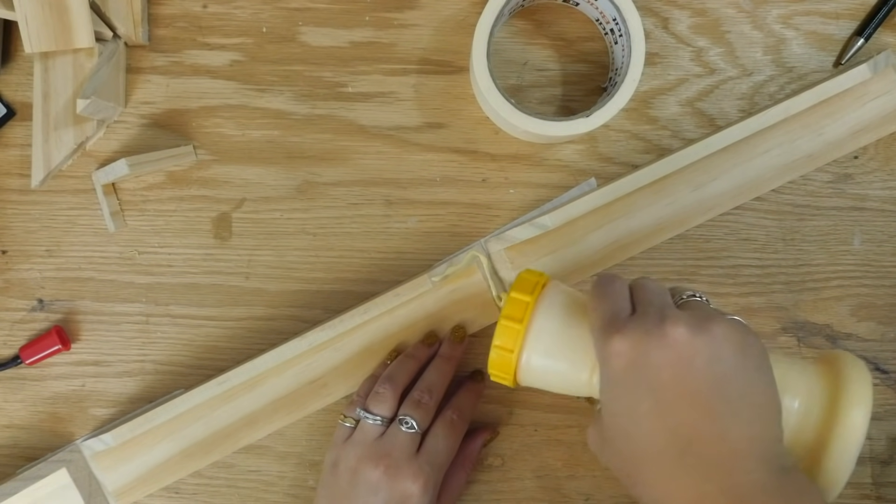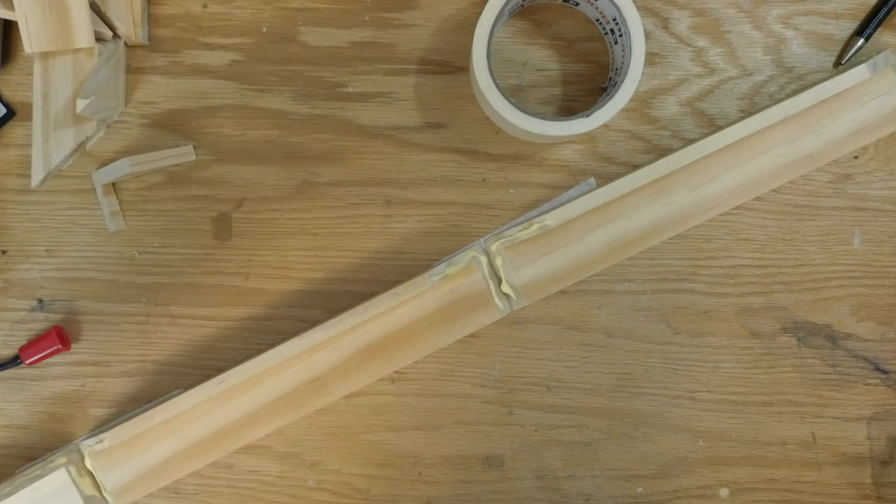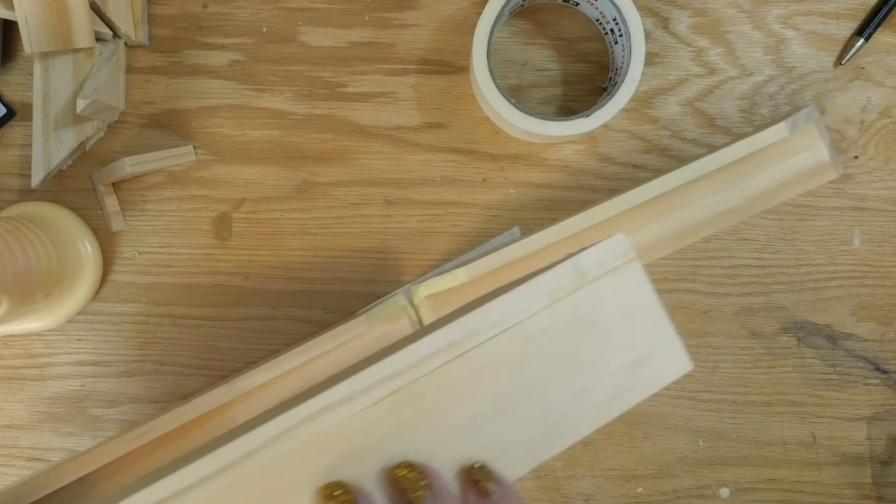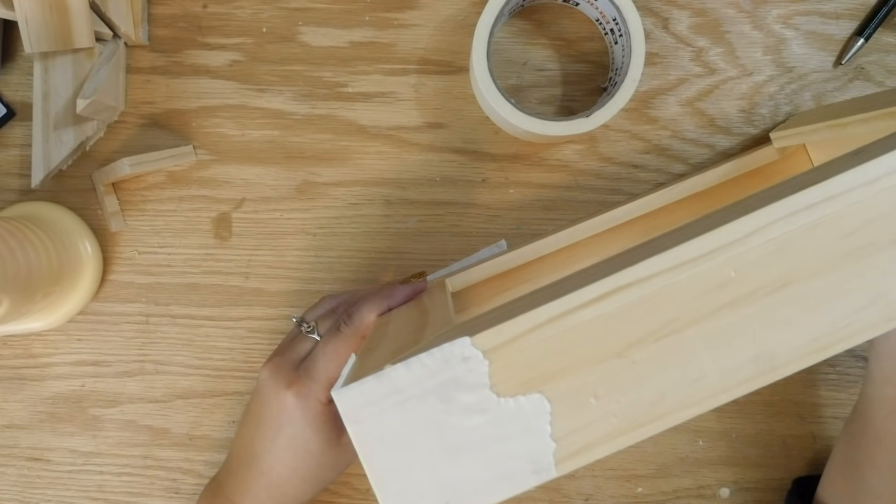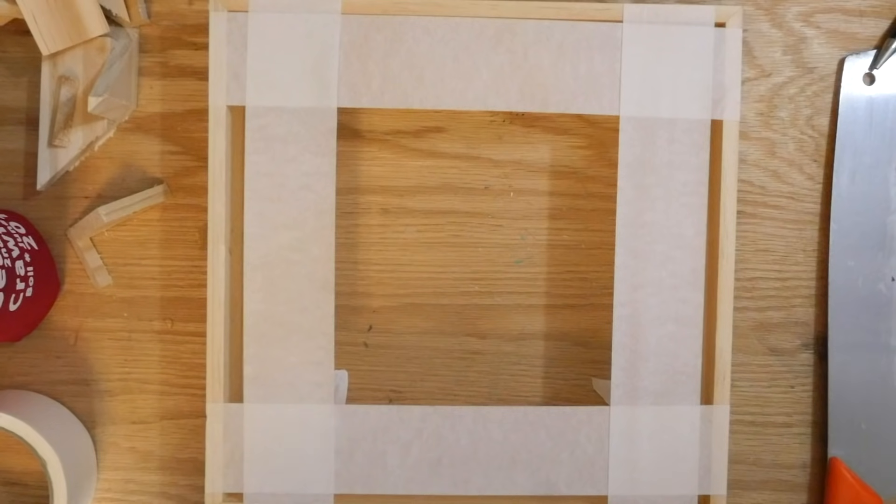Apply glue to all of the ends and assemble the frame. For me, with the taped edges, I just had to roll it up and then add one last piece of tape to the fourth corner. If you have one of those fancy corner band clamps, you can use that to hold the frame while it dries. I don't, but I find the tape works well enough. I ended up adding some more tape going across each corner just to make sure everything was nice and tight. Clean up any excess glue and then let it dry.